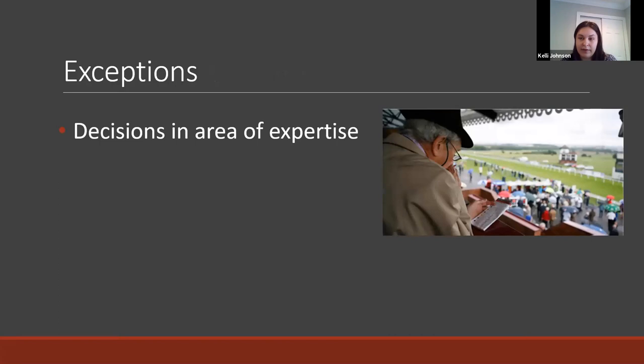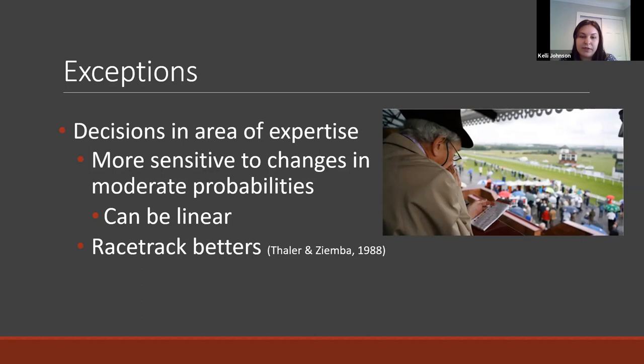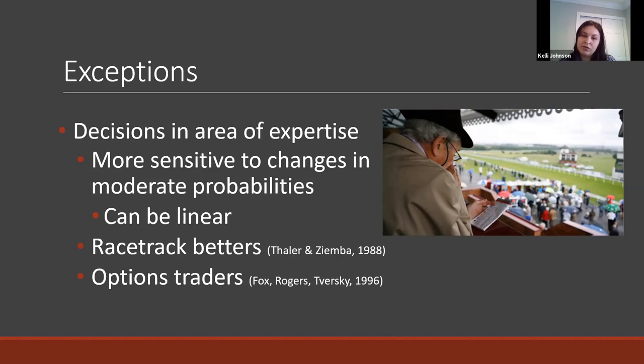There are some exceptions. When people make decisions in areas where they have a lot of expertise, they don't exhibit as much probability distortion — they're more sensitive to changes in moderate probabilities and can even exactly match the nominal probabilities with no distortion. Examples noted in the literature are racetrack bettors and options traders, who deal with these risks all the time and show less probability distortion than others.